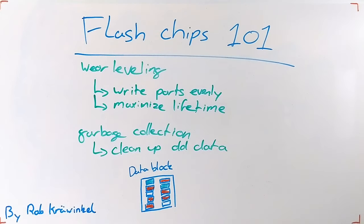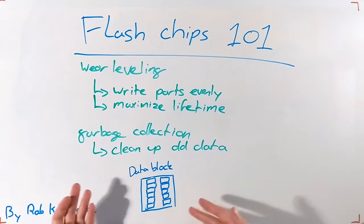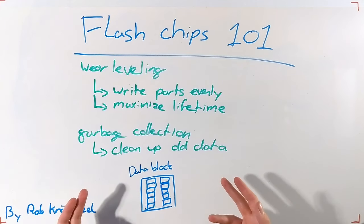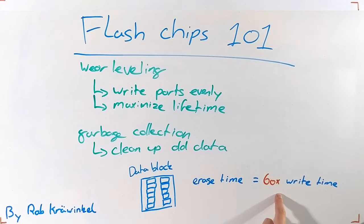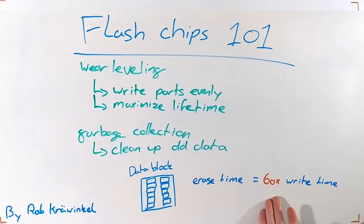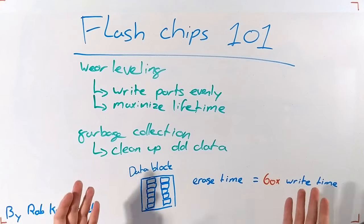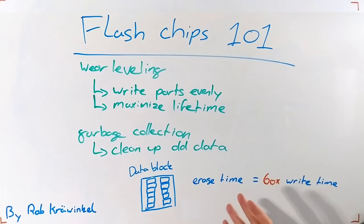Both require erase operations to happen, clearing out data blocks which contain pages. Erase operations are about a factor 60 slower than write operations, meaning that a write could be slowed by 60 times if an erase is happening before it. As shown by the write time results, this happens on an irregular basis with irregular effects.